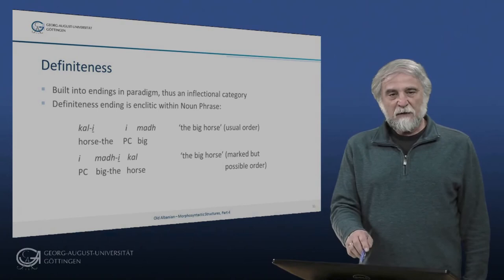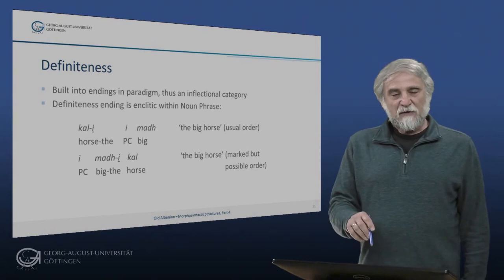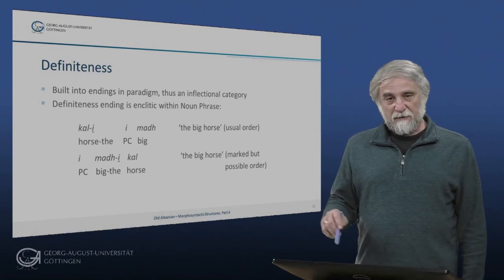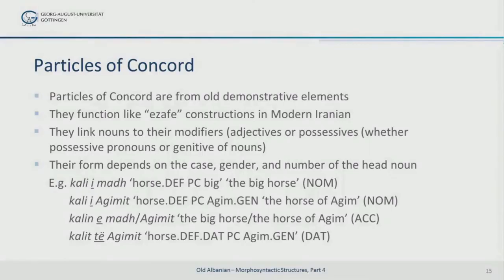Definiteness is built into the endings in the paradigm and thus represents an inflectional category. We have, for instance, 'vajzë' for 'a girl' in the nominative, and 'vajzën' for 'the girl' in the accusative. The particles of concord are from old demonstrative elements, so the demonstratives were doing a lot of work, so to speak, in the noun phrase.